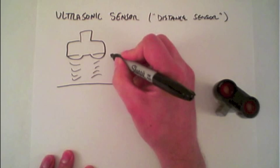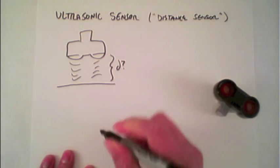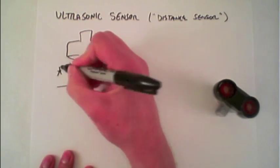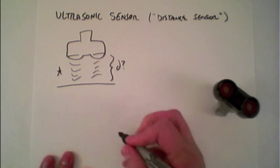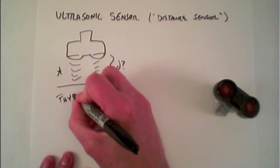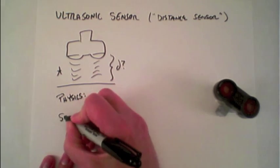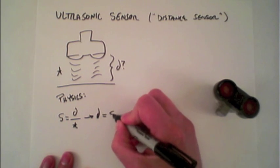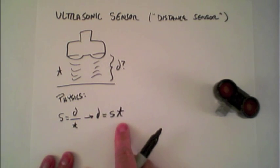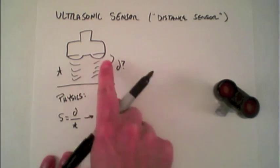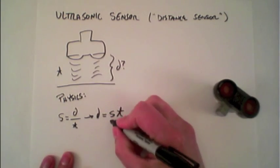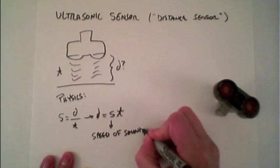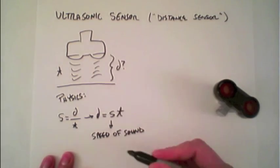The question is what's that distance. The known quantity is the amount of time it takes for these pulses to get sent out and reflected back. Using some physics, if we remember that speed equals distance over time, and we're solving for distance, we know that distance equals speed times time. We know the time that it takes to go out and back, and the speed in this case is the speed of sound because it's using sound waves to determine the distance.